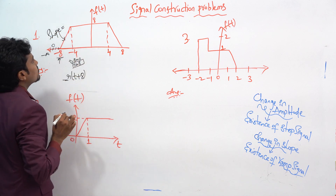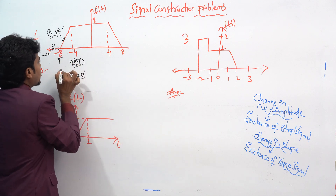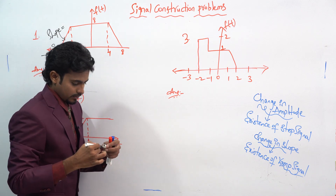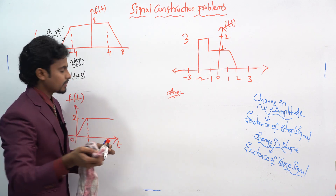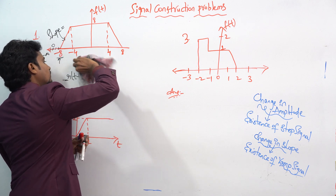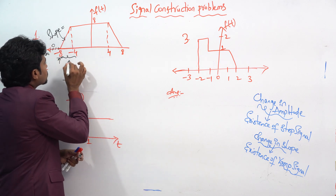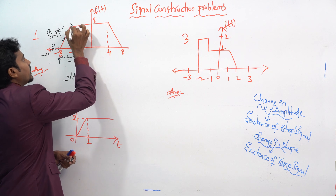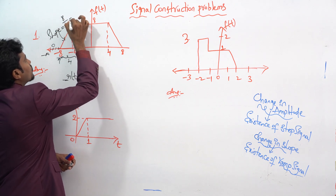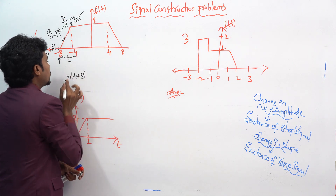The slope is found as change in y-axis divided by change in x-axis. Here the change in y is 8 and the change in x is 4, so 8 divided by 4 gives us a slope of 2.